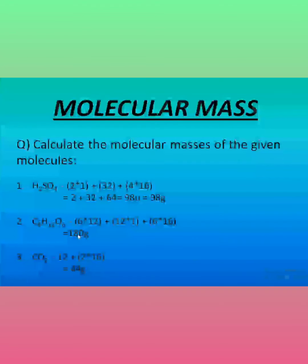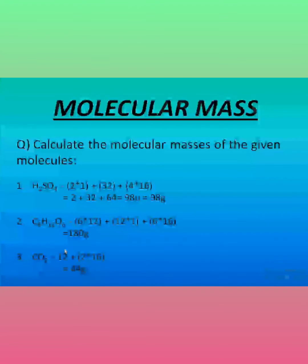I hope you now know how to calculate the molecular mass. One more example is carbon dioxide. Carbon has an atomic mass of 12, and we add two times the atomic mass of oxygen, which is 16. So the answer is 44 grams.